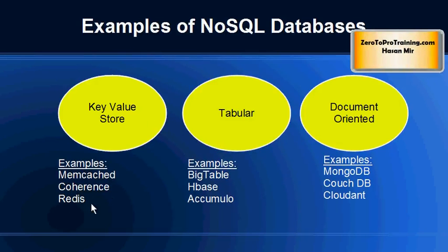Memcached, Coherence, and Redis are examples of key-value store databases. Bigtable from Google is an example of a tabular NoSQL database, and then we have HBase and Accumulo. In document-oriented databases, MongoDB is the most popular one, and then we have CouchDB and Cloudant.